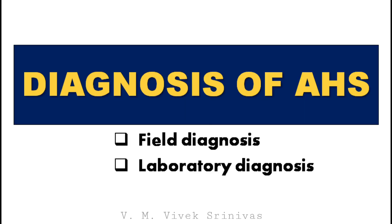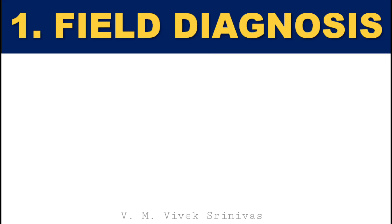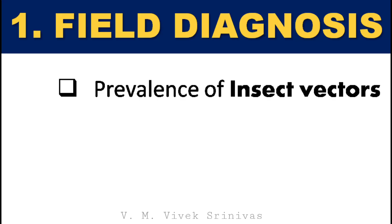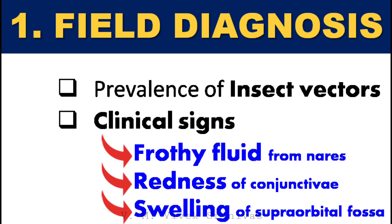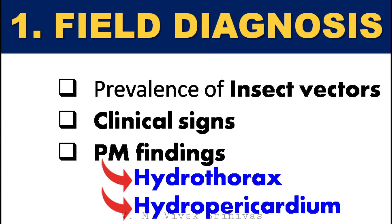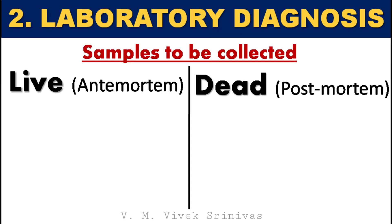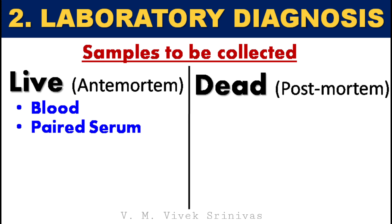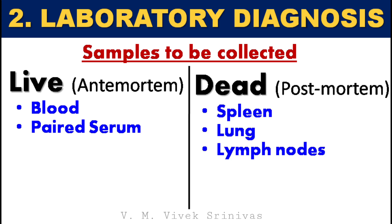Diagnosis can be done at field level or in laboratories. Field diagnosis is based on the prevalence of biological vectors like Culicoides species; signs and clinical symptoms such as frothy fluid from the nares, redness of the conjunctiva, and swelling of the supraorbital fossa; and post-mortem findings like hydrothorax and hydropericardium. For laboratory diagnosis, blood and paired serum samples are collected from live animals; in dead animals, spleen, lung, and lymph nodes are collected.